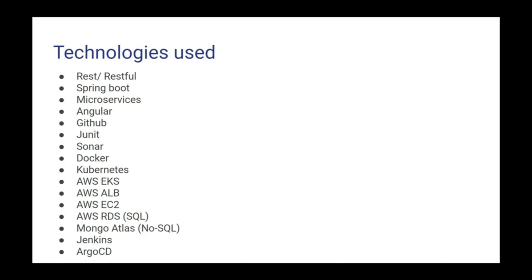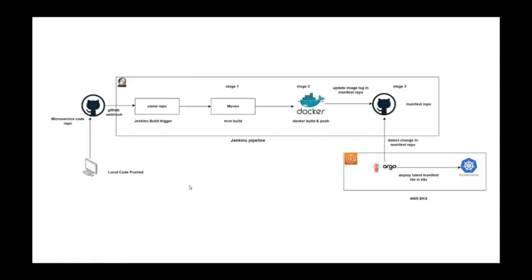We have launched a course covering an end-to-end full stack application using Angular as front end, and microservices and Spring Boot as the back end. We have used cloud to deploy this application, and CI/CD — that is Jenkins and Argo CD — for continuous integration and continuous deployment. Technologies used include RESTful web services, Spring Boot, microservices, Angular, GitHub for version control, JUnit for unit testing, and SonarQube for code quality checks.